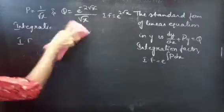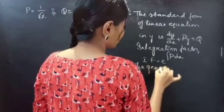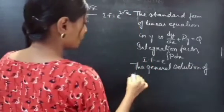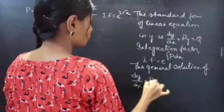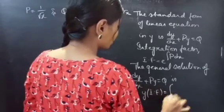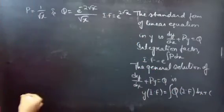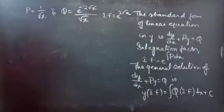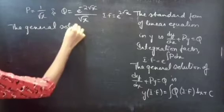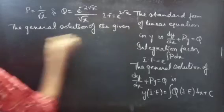Now let's find the general solution to the given equation. We know that the general solution of a linear equation in y — dy/dx + P·y = Q — is given by: y times integrating factor equals integral of Q times integrating factor dx plus C. We will use this formula to find the general solution.